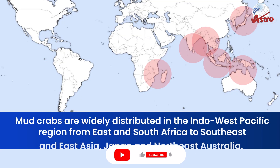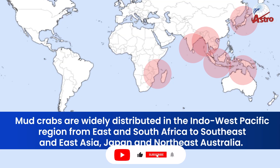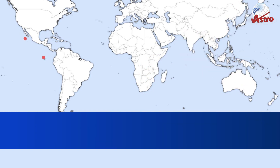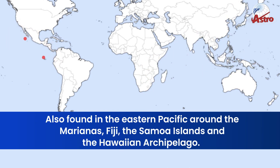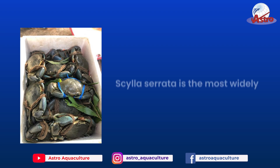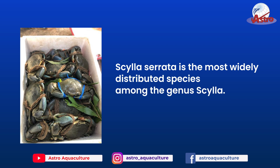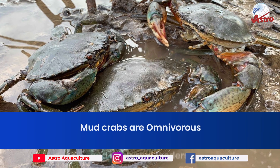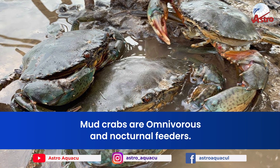Mud crabs are widely distributed in the Indo-West Pacific region, from East and South Africa to Southeast and East Asia, Japan, and Northeast Australia. They are also found in the eastern Pacific around the Marianas, Fiji, the Samoa Islands, and the Hawaiian Archipelago. Cilla sarata is the most widely distributed species among the genus Silla.